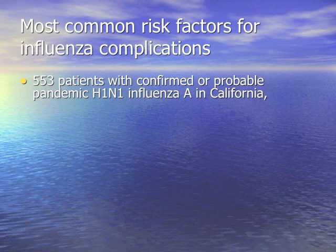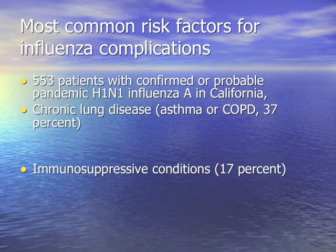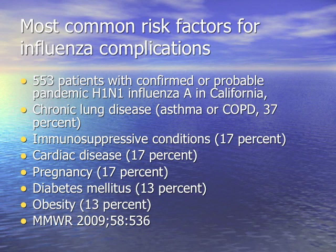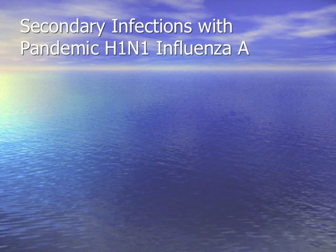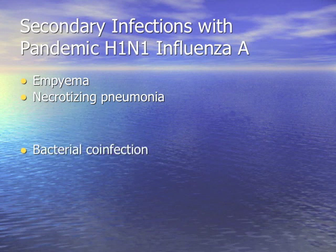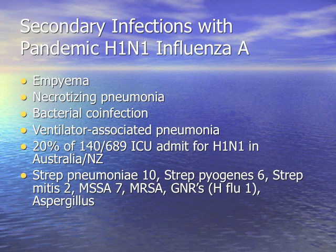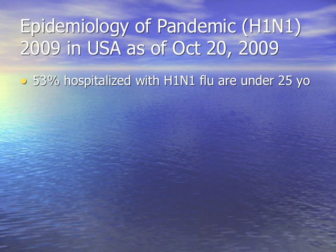Complications of influenza are more likely in asthmatics, COPD, immunosuppressed, cardiac disease, pregnancy, diabetes, obesity, and the elderly — though the elderly were actually protected against H1N1. Complications include empyema, necrotizing pneumonia, bacterial co-infections, and ventilator-associated pneumonias. The typical co-infecting bugs are Strep pneumoniae, Group A Strep, occasionally Strep mitis, Staph/MRSA, gram negatives, and even Aspergillus.